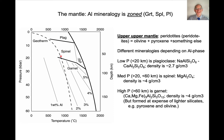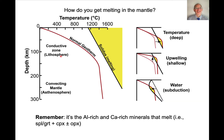Here's a simplified diagram with temperature increasing to the right and pressure and depth increasing downward. This is our normal geotherm. The solidus is shown: above it there's melting, below it the rock is solid. In the shallow mantle we have the lithosphere — the mantle is stiff and conductive. Deeper, it's convecting, not necessarily melted, but hot enough that it's actually circulating around.